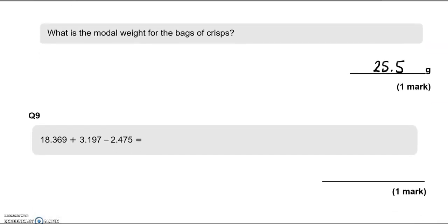Question number 9. 18.369 plus 3.197 take away 2.475 equals what? So, we'll break this down into parts. We'll do the addition first and then the subtraction. So, 18.369 add 3.197. The decimal point is under the decimal point. 9 and 7 is 16. So, 6 down and 1 carried over. 9 and 1 is 10 and the 6 is 16. So, we carry 1 over. We've got 3 and 1 is 4 and 1 is 5. 8 and 3 is 11. 1 and 1 is 2.